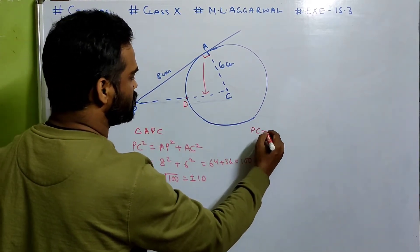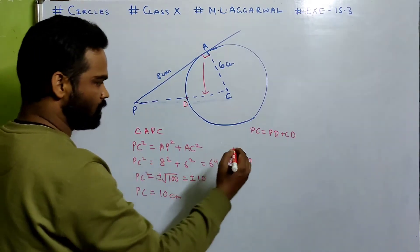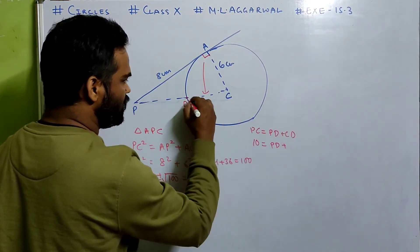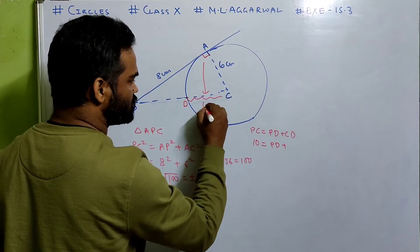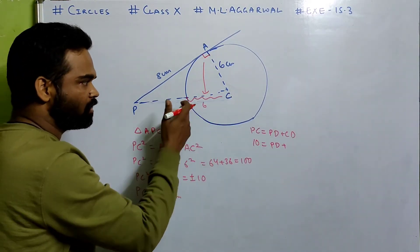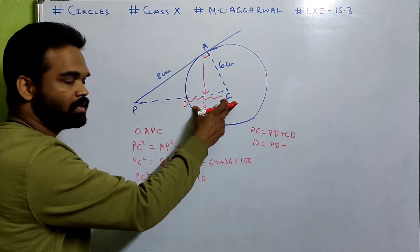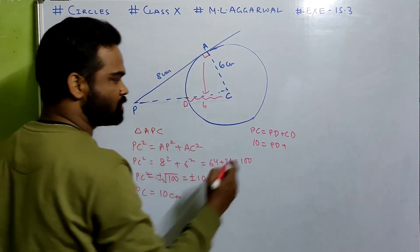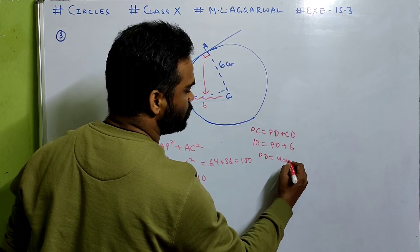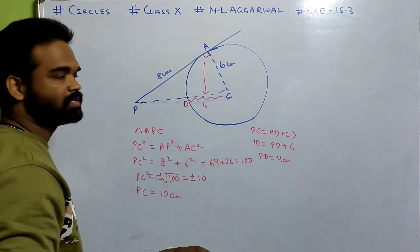Now PC = 10 cm. PC = PD + CD. So 10 = PD + CD. CD is the radius, which is 6 cm. Therefore PD = 10 − 6 = 4 centimeters. Pretty simple.